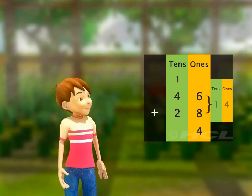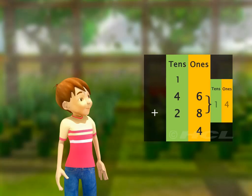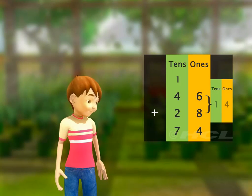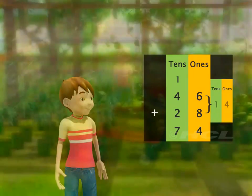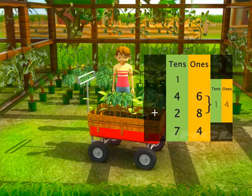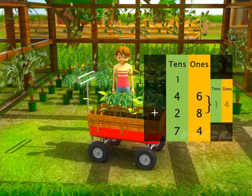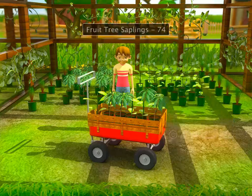Now, we add the carryover 1 to the numbers in the tens column. Adding the carryover 1 to the numbers 4 and 2 in the tens column, we get 7. So we write 7 in the tens column of the answer. So, if Sam selects 46 mango saplings and 28 banana saplings, then he selects 74 saplings of fruit trees in all.